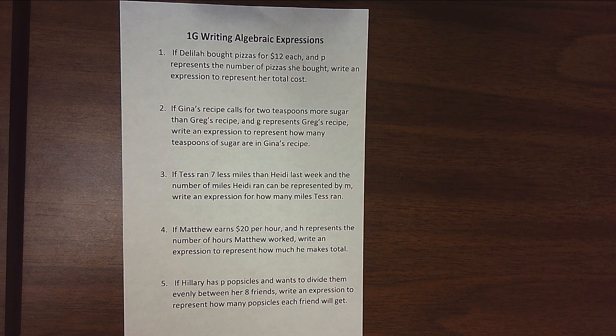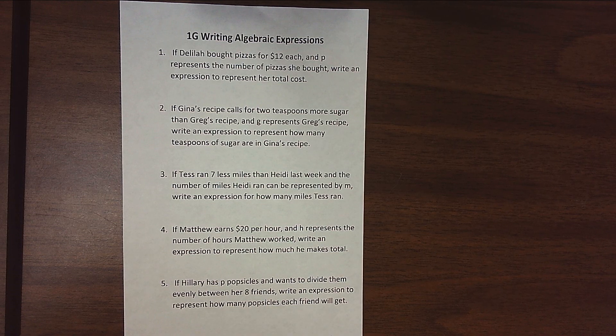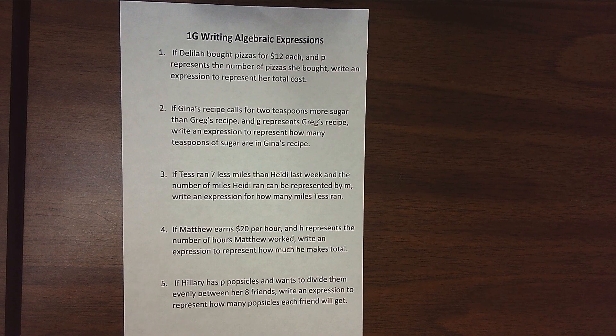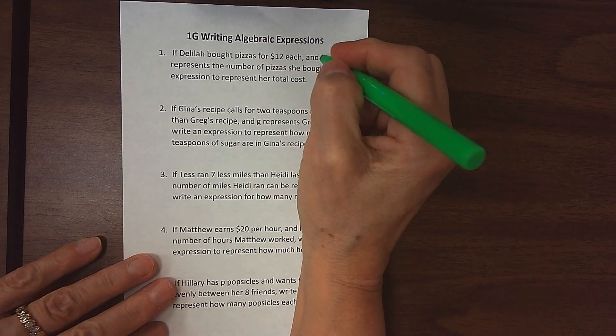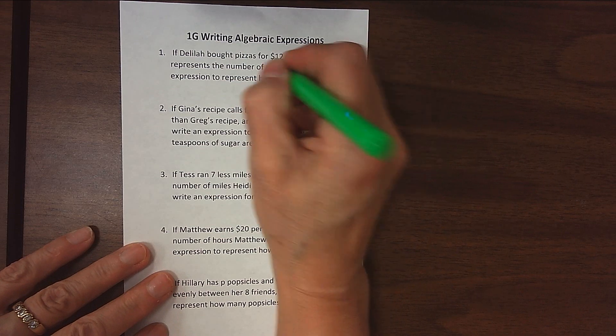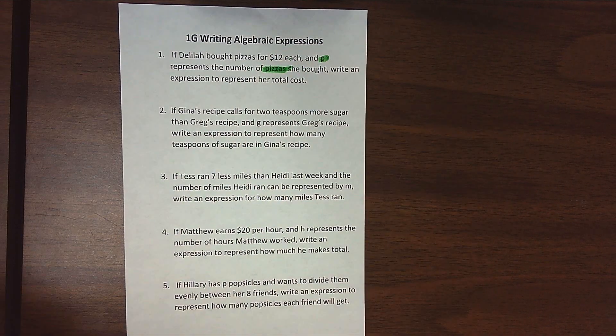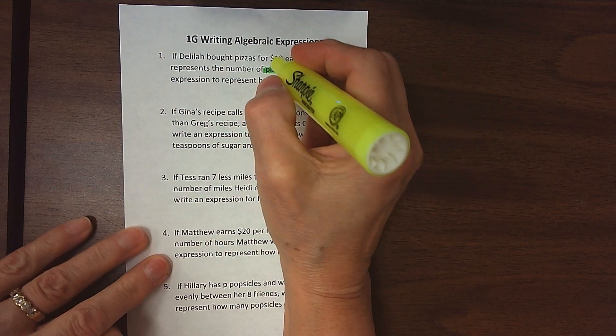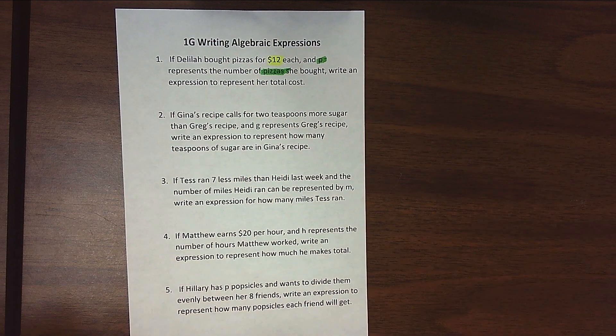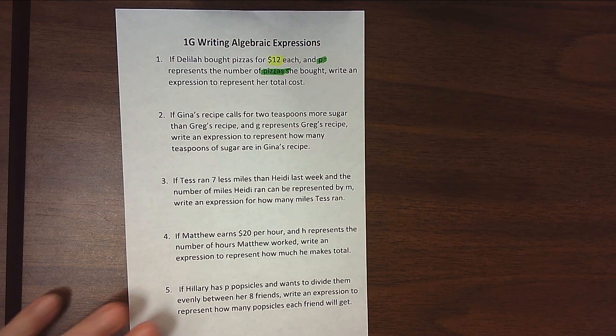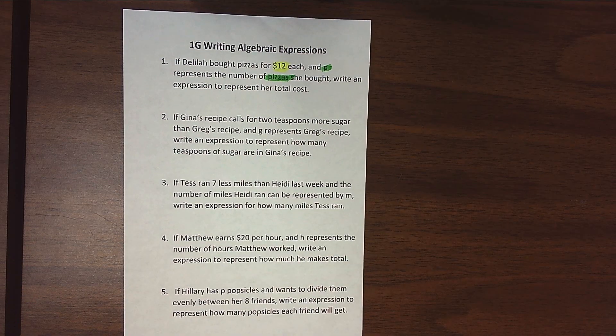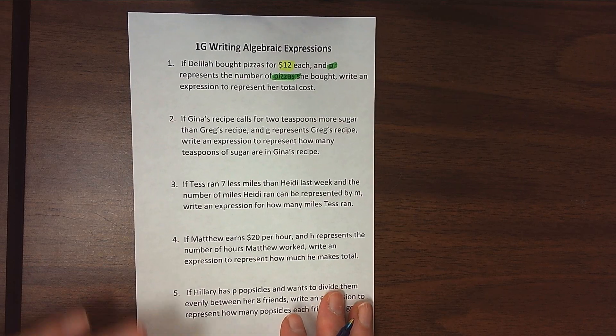If Delilah bought pizzas for $12 each, and P represents the number of pizzas she bought, write an expression to represent her total cost. So we know that P is going to stand for our pizzas, and we know that each pizza costs $12. So if I bought one pizza, I'd pay $12. If I bought two pizzas, I'd pay 12 plus 12. Three pizzas, 12 plus 12 plus 12. So that's repeated addition. Anytime I'm doing repeated addition, we want to think multiplication.